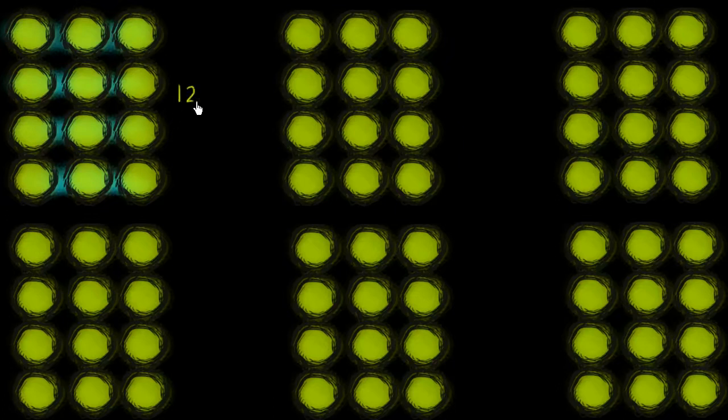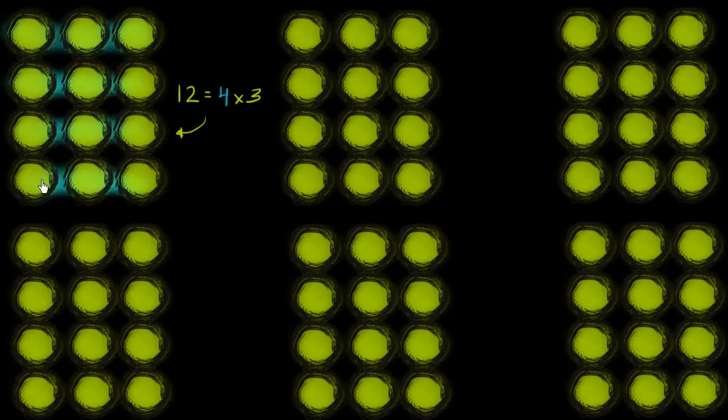So I could view 12 as being 4 groups of 3. And the way that we would write that is 12 is equal to 4 groups of 3, or another way of reading this is that 12 is equal to 4 times 3. If I have 4 groups, and in each of those groups I have 3 objects, I'm going to have a total of 12 objects.